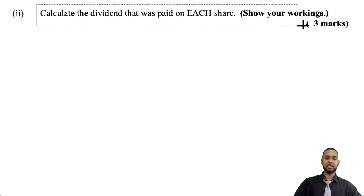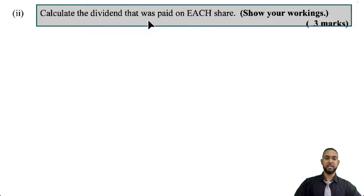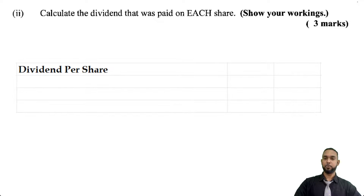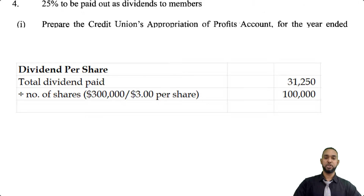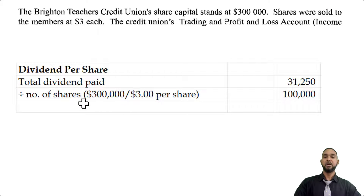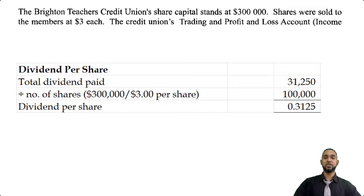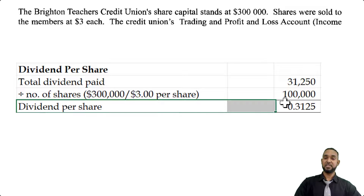C part 2 asks us to calculate the dividend paid on each share. Dividend per share = total dividends paid ÷ number of shares. Total dividends from the appropriation account = $31,250. Number of shares = $300,000 share capital ÷ $3 per share = 100,000 shares. So $31,250 ÷ 100,000 shares = $0.3125, which is 31.25 cents per share — that's the dividend per share.